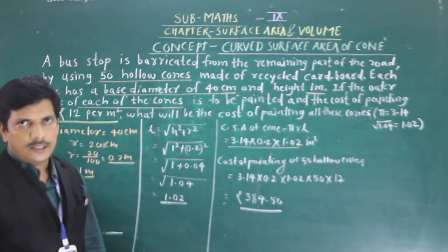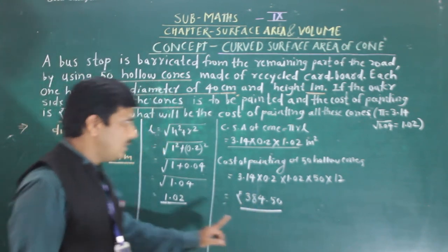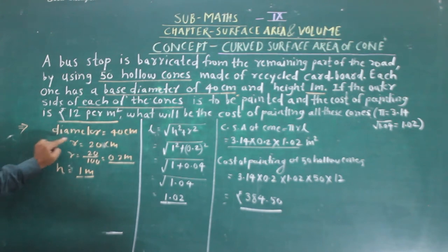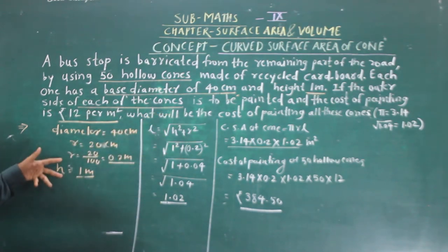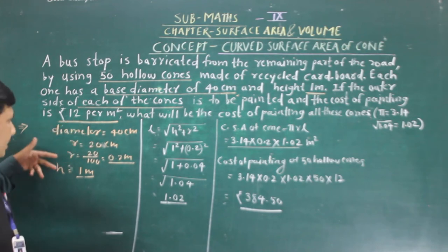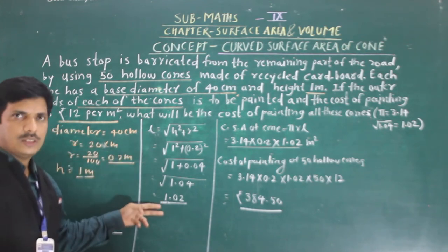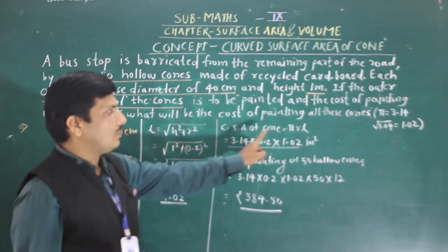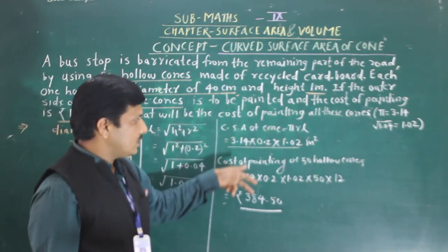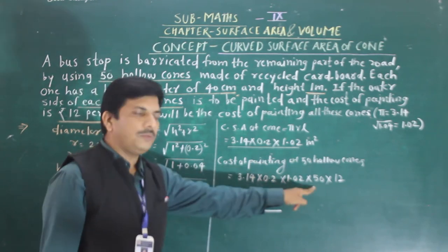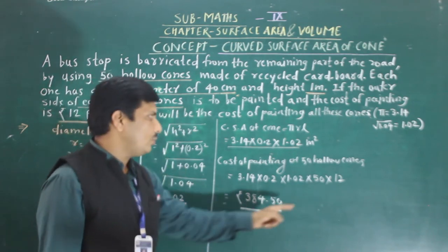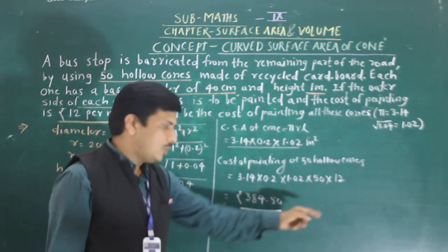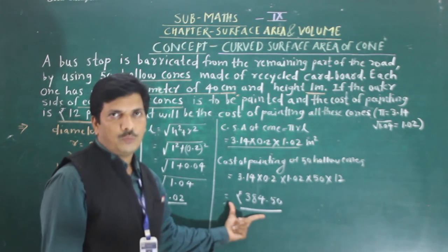So the total cost of painting is rupees 384.50. To summarize: diameter was given, so we found radius and converted it to meters since other dimensions are in meters. With height and radius we found slant height. Without slant height we cannot find curved surface area of the cone. Once we get the curved surface area, we multiply by 50 cones and the cost of 12 per meter square.